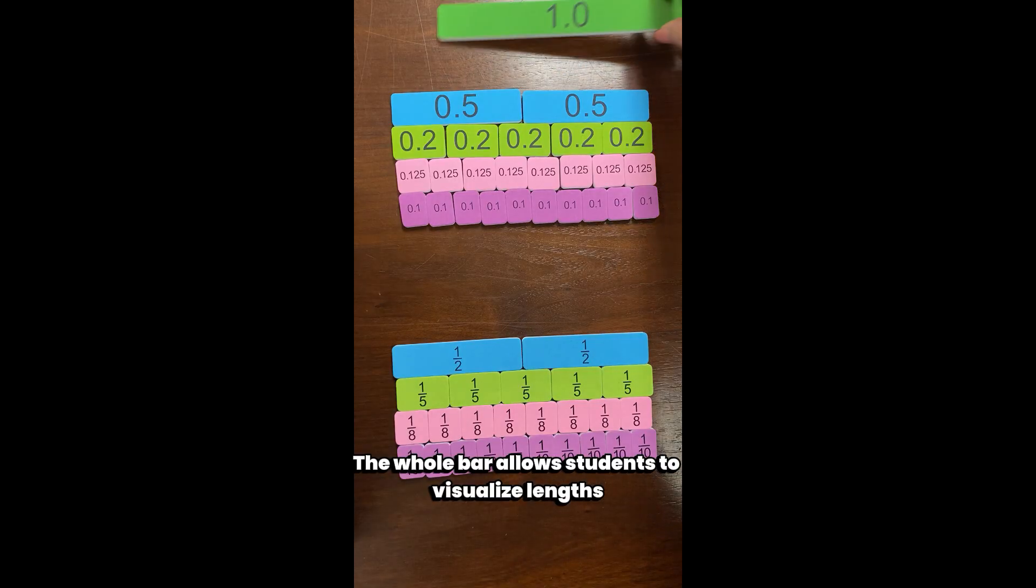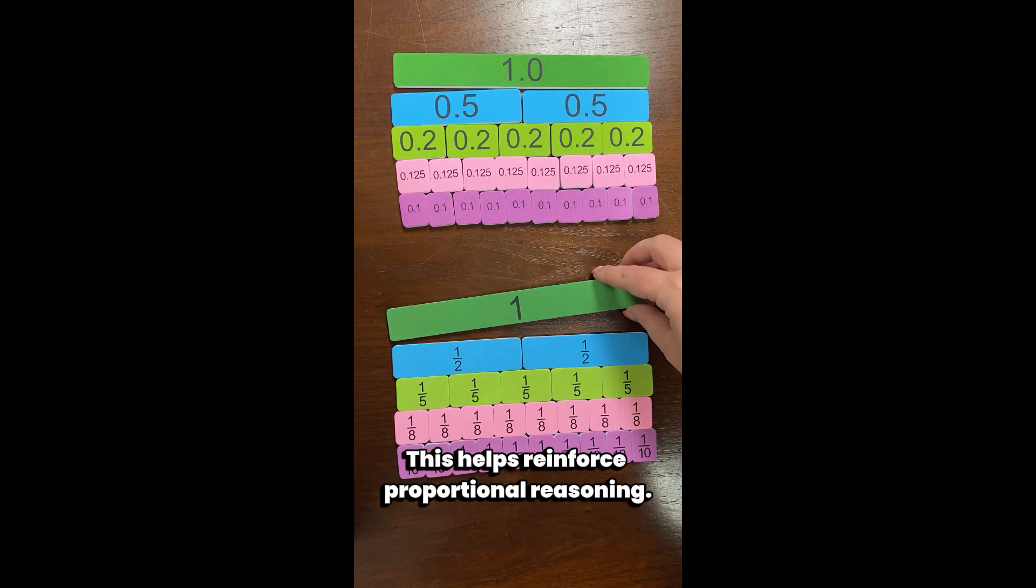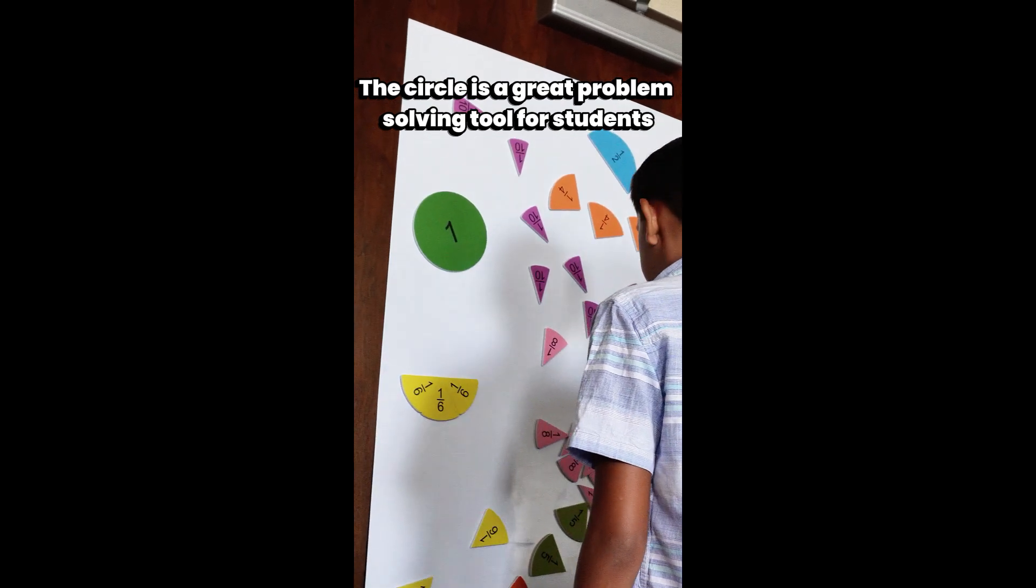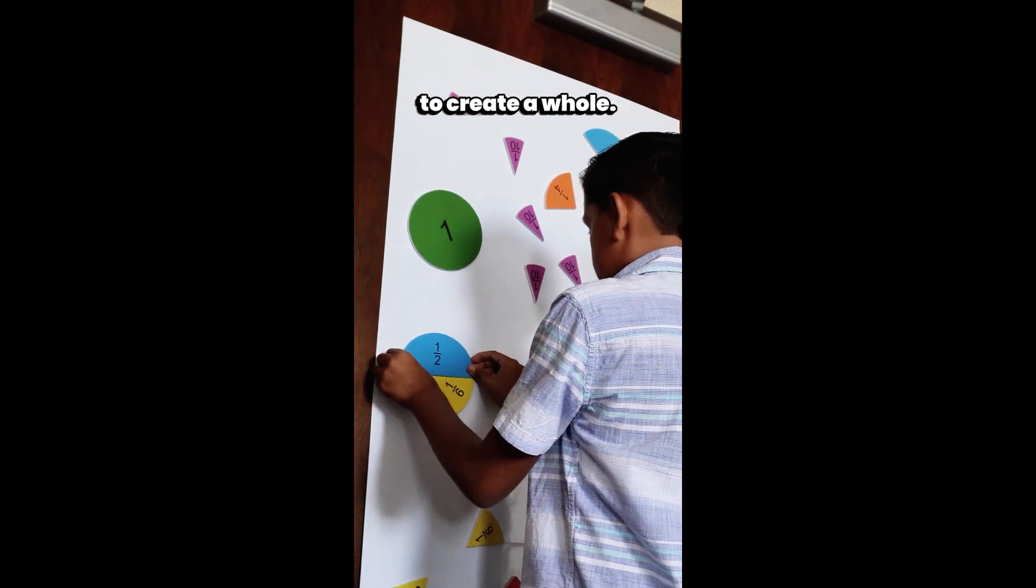The whole bar allows students to visualize lengths as part of a whole. This helps reinforce proportional reasoning. The circle is a great problem-solving tool for students to conceptualize what parts fit together to create a whole.